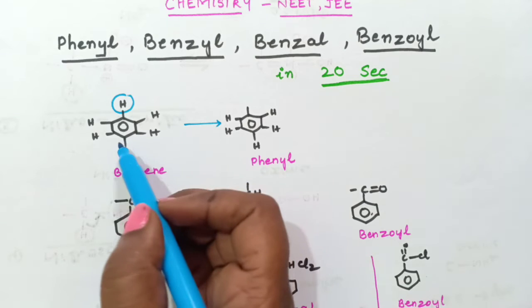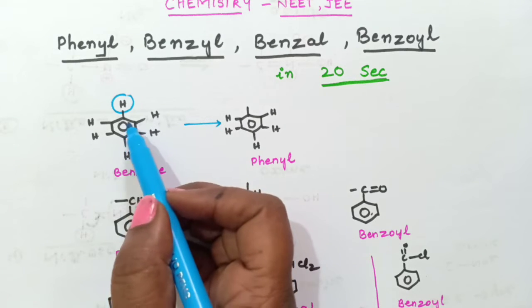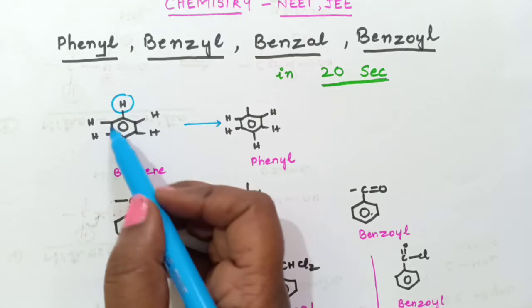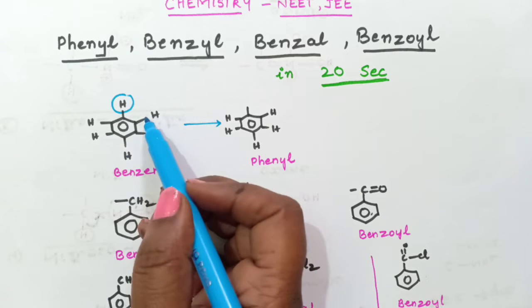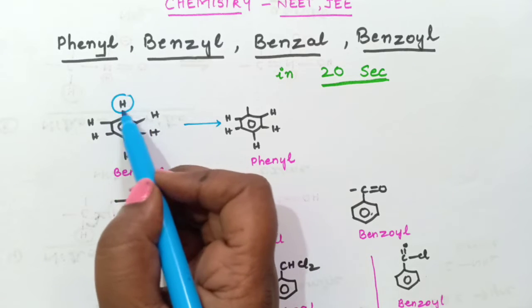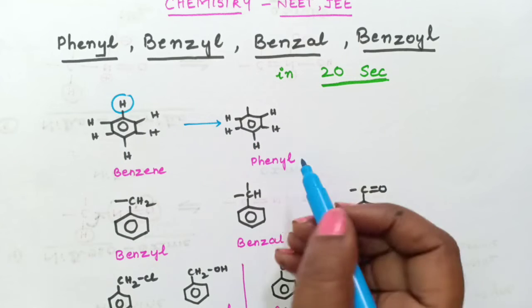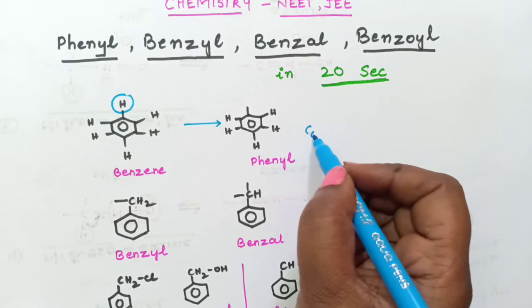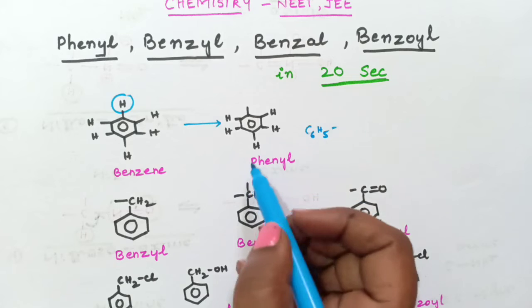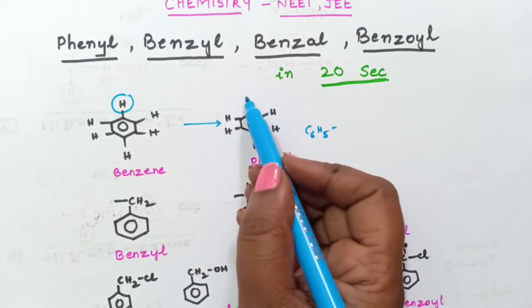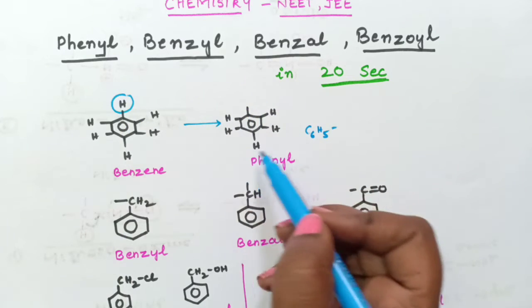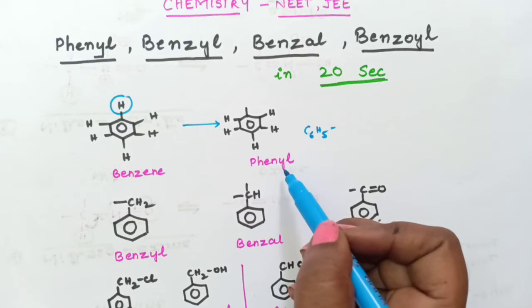So see here, benzene you know that the structure of benzene consists of 6 hydrogen atoms, benzene ring and 6 hydrogen atoms. Suppose if you remove 1 hydrogen atom from here it becomes C6H5. So C6H5 is called as phenyl group. So after you remove 1 hydrogen, the structure what we are getting is called as phenyl.